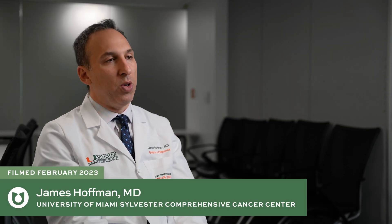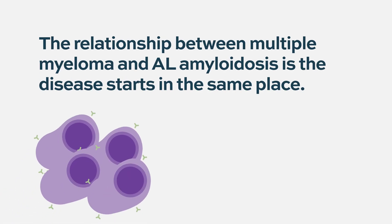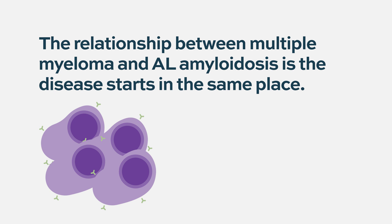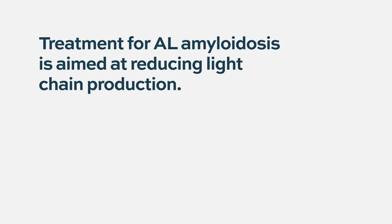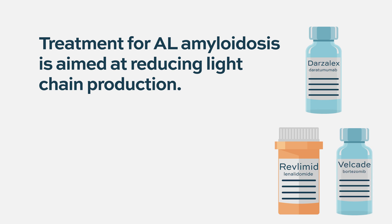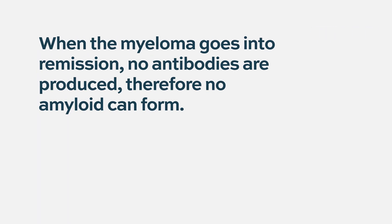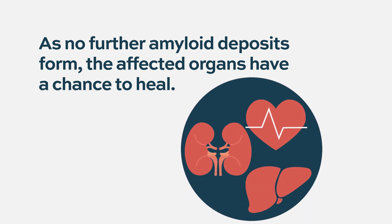The best way to think about the relationship between myeloma and amyloidosis is that the disease really starts in the same place — the myeloma cells themselves produce the antibody that forms the amyloid. So if a person is getting sick with AL amyloidosis, we fire our medical bullets at the multiple myeloma. We give them Darzalex, Revlimid, Velcade — you choose from the array of medicines. When the myeloma goes into remission, no antibodies are produced and no amyloid can form. The treatment is focused on the myeloma itself, and then we look for organ improvement in the heart and kidneys as no further amyloid forms and the organs can hopefully heal.